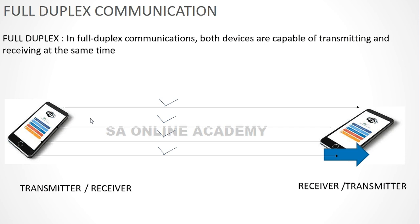That covers the types of communication. Now let's move to wireless topologies. Although our concentration is on WLAN or 802.11, in order to understand 802.11 you must have a clear idea about all wireless topologies and what topologies exist in wireless technology.